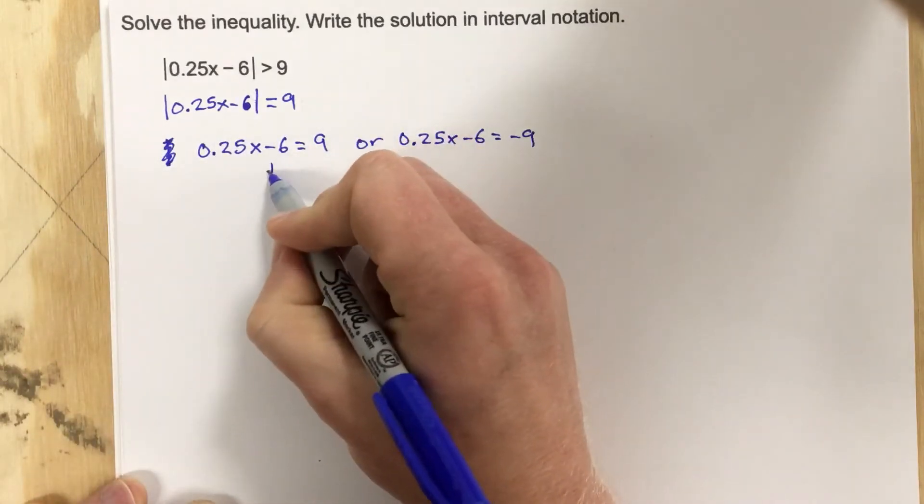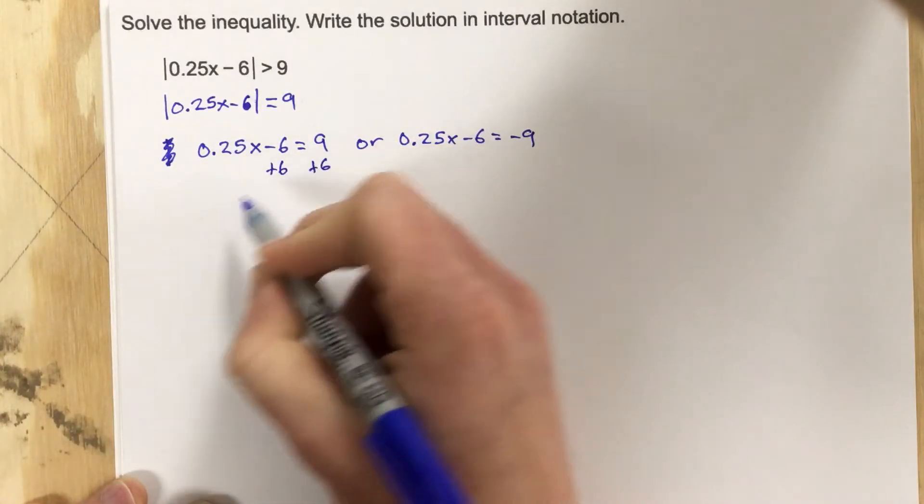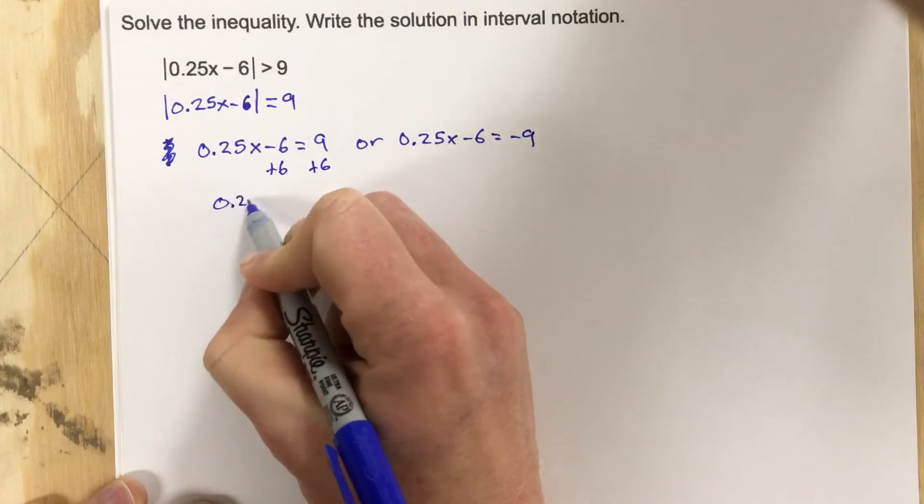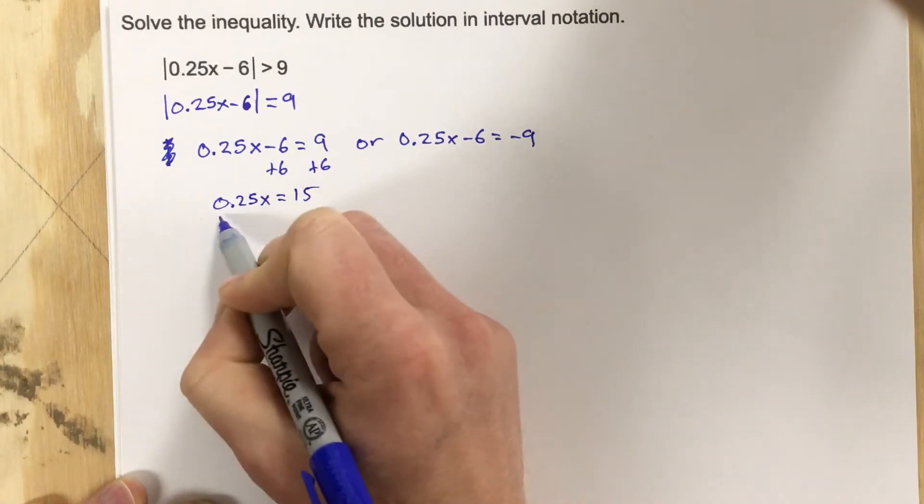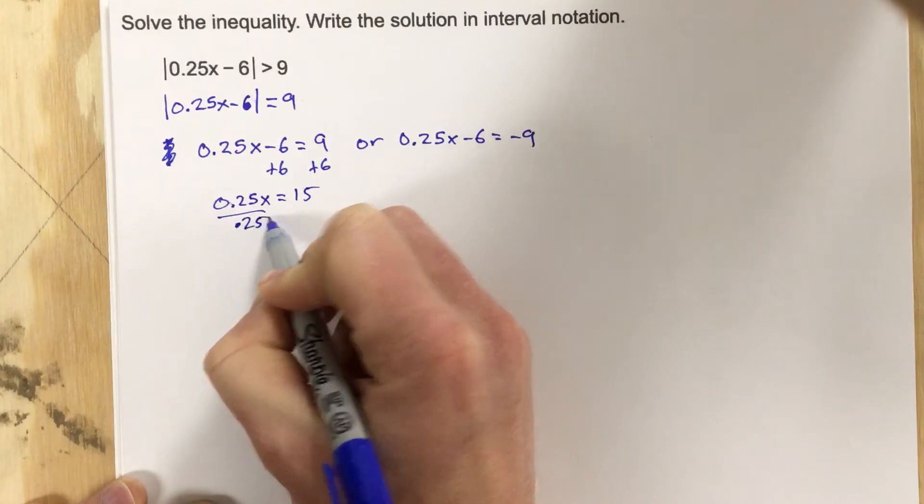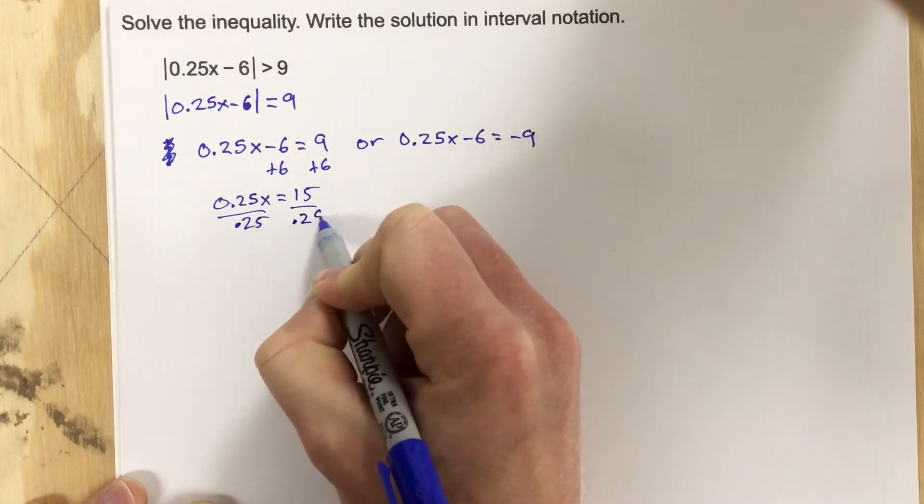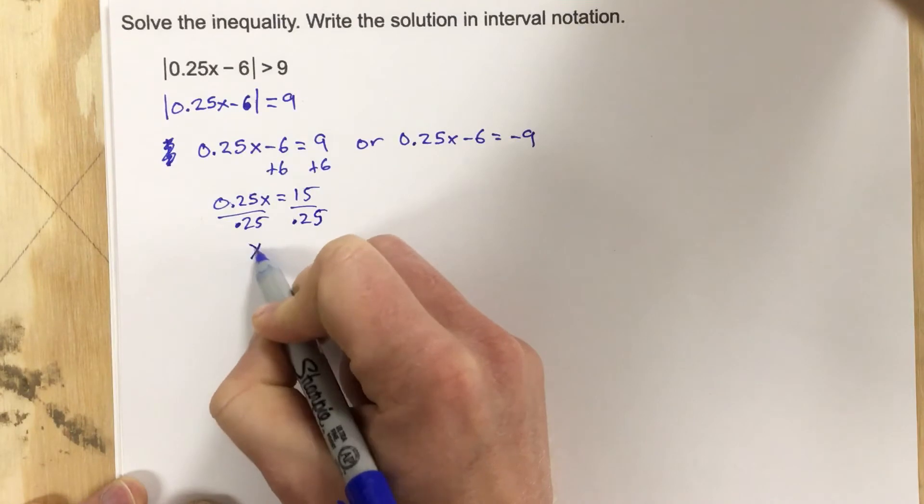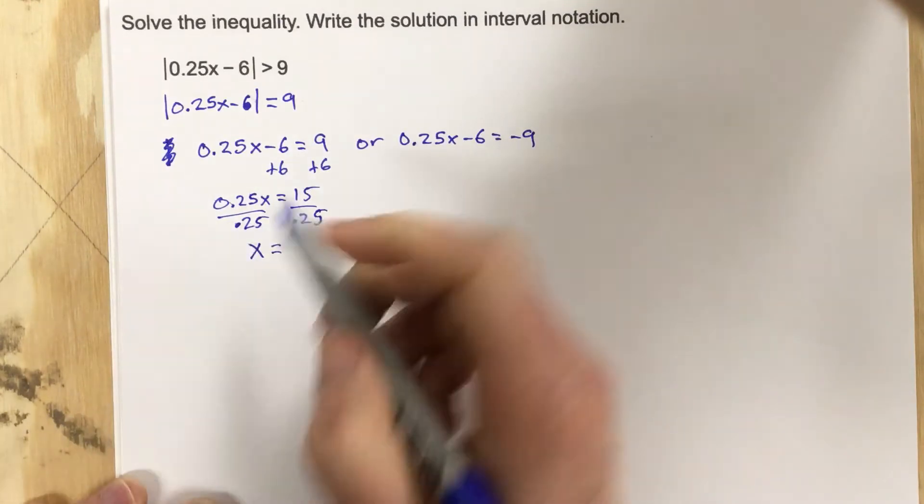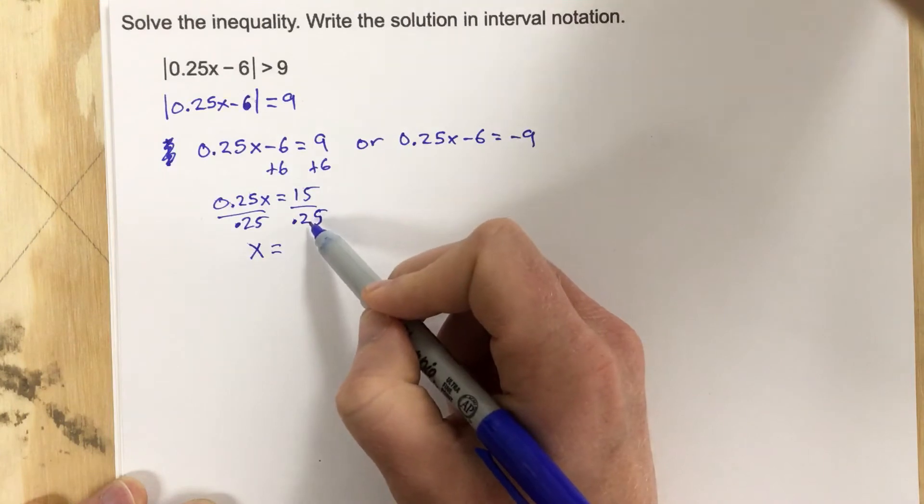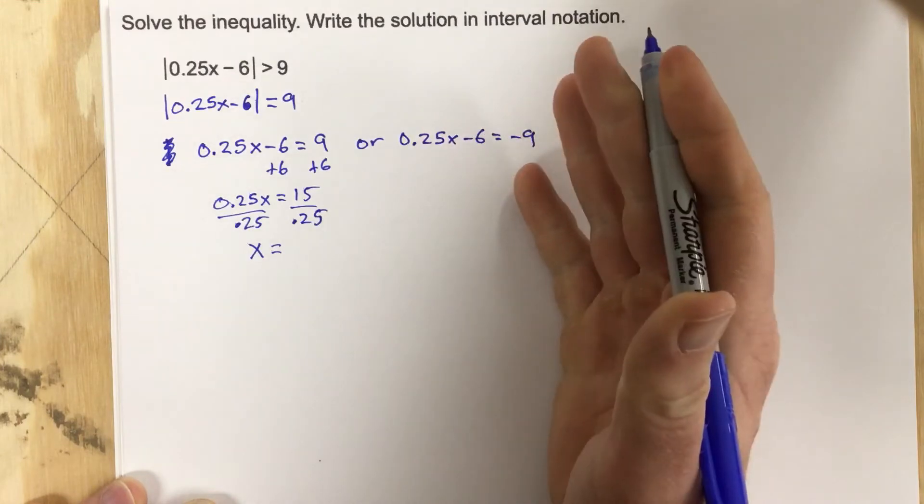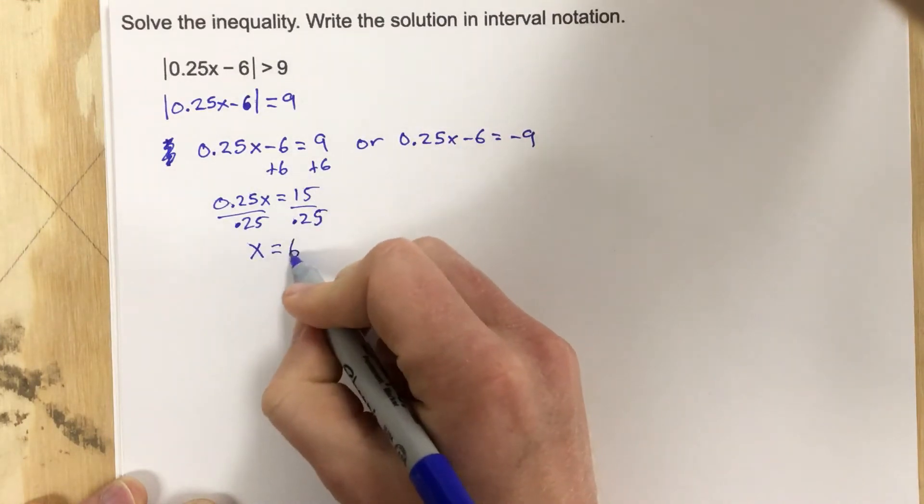Now I'm going to add the 6. I get 0.25x equals 15. I'm going to divide by 0.25. Now when you divide by 0.25, it's essentially like multiplying by 4, because how many times does 0.25 go into 15? It goes in there 4 times would go into 1, and then 15 more would go into 15, so 4 times 15, you end up with x equals 60.